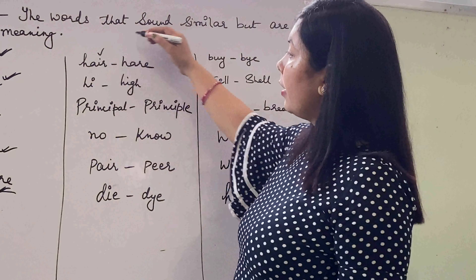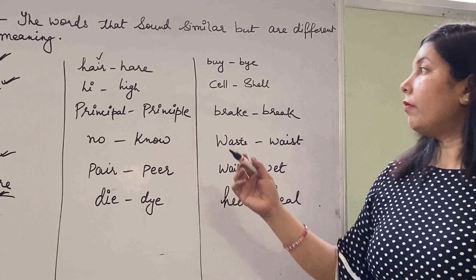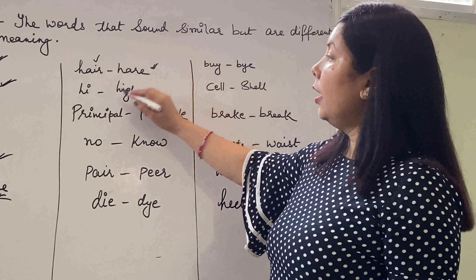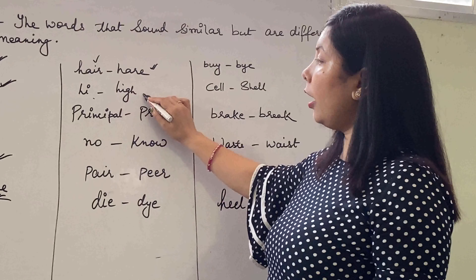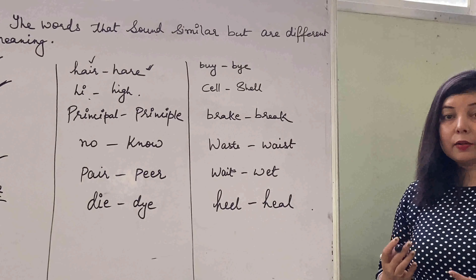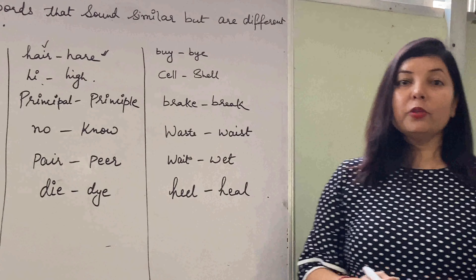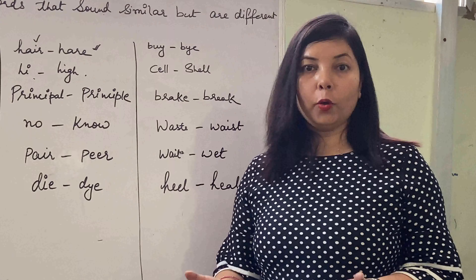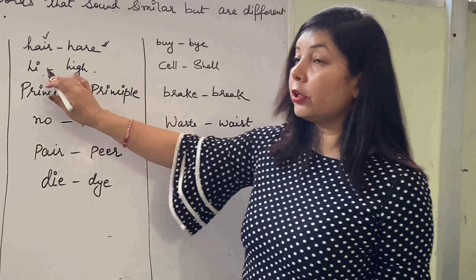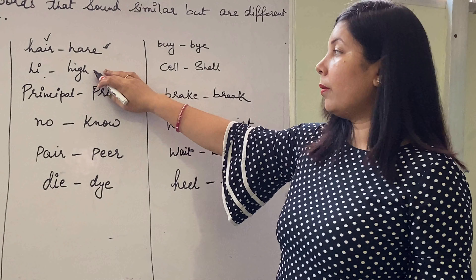Jaisa, H-A-I-R 'hair' with this 'hare', whereas this 'hare' means khargoosh (rabbit). 'Hi' and 'high' — when I say 'hi', it is like when you meet people, then you say hi or hello. Okay, when you wish people, you say 'hi'. And this 'high' comes with a pooncha (with a tail — refers to spelling).